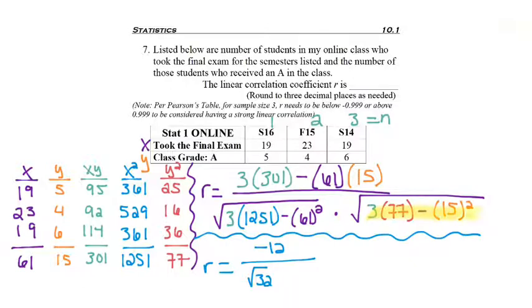Now I need to calculate the interior of the next square root. So 3 times 77 minus 15 squared gave me 6. Using the rules of exponents, I'm allowed to multiply the interiors of the square roots. So I've got my negative 12 on top, and now it's the square root of 192.